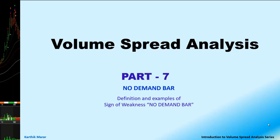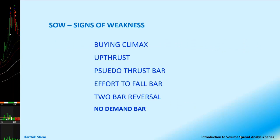Welcome to part 7 of the series on Volume Spread Analysis — the No Demand Bar. We have been looking at signs of weakness so far, and we have looked at the buying climax, the upthrust bar, the pseudo-upthrust bar, the effort to fall bar or effort to move down bar, the two-bar reversal, and now we are going to look at the no-demand bar.